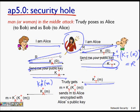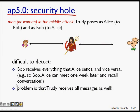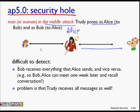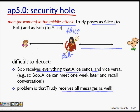So even with a nonce and public-private key pair, the man-in-the-middle problem remains. The security hole is that Trudy poses as Alice to Bob and as Bob to Alice. Bob receives everything Alice sends and vice versa, but Trudy receives all the messages as well. This is the authentication problem with man-in-the-middle attacks.